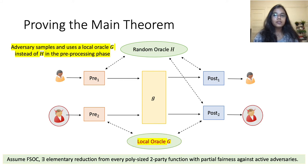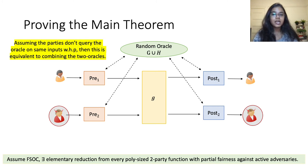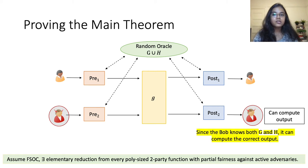We consider a corrupt Bob that lazy-samples its own oracle G and uses that in the pre-processing phase instead of the common random oracle H. In the post-processing phase, it uses both G and H — specifically H for the queries that Alice made in its pre-processing phase, and G for the queries that it made during the pre-processing phase. Since the parties query the oracle on randomly chosen seeds, with very high probability the sets of inputs on which Alice and Bob query the random oracle will be different. As a result, we can pretend that Alice and Bob honestly invoked the protocol on a new random oracle obtained by combining G and H.